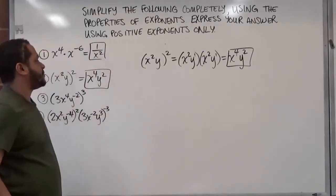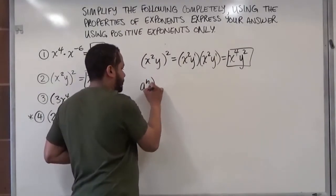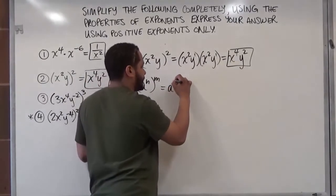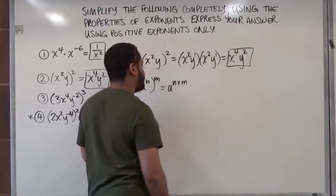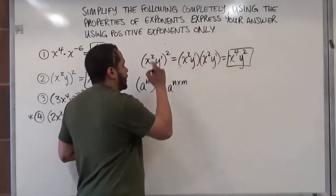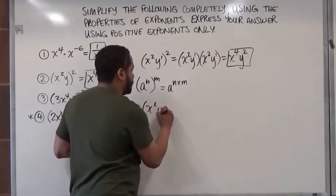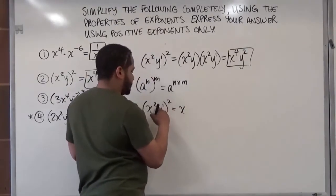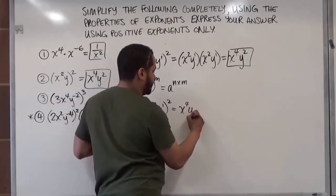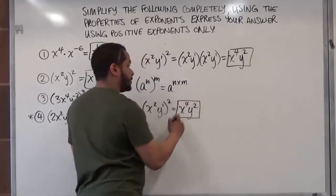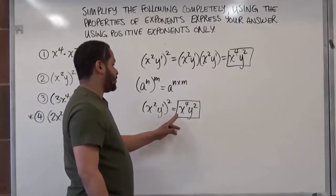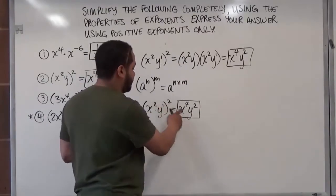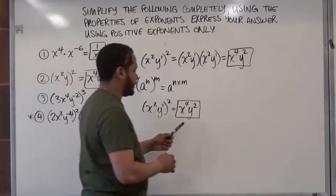Now let's use the properties of exponents. The properties say if we have an inside term with an exponent and an exponent outside the parentheses, we multiply the two against each other — a to the power of n times m. The y has a power of 1, so we have x squared, y to the first, to the second power. Distributing this power to each term: x gives us 2 times 2 equals 4, and 2 times 1 for y gives us 2. This is one step instead of expanding everything out, and that takes care of problem number 2.